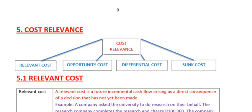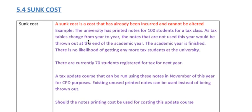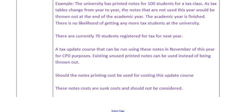Going back to the relevant costing example: alternatively, they could sell the research for 60,000 rand. There is a sunk cost of 100,000 rand, but because you could sell the research for 60,000 rand, the relevant cost is 60,000 rand. Therefore, there is a relevant cost of 60,000 even though the 100,000 is sunk. Similarly, in the notes example, we cannot use or sell the notes to anybody — that cost is sunk and will not factor into any decision making at all.